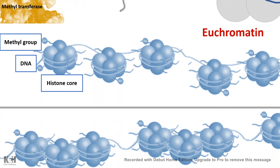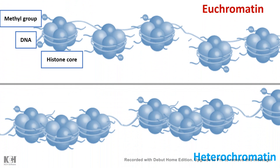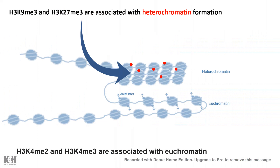Methylated histones are associated with both euchromatin and heterochromatin — it depends on which residue is methylated. For example, H3K9 trimethylation and H3K27 trimethylation are associated with heterochromatin states. So depending upon which residue is methylated and what type of methylation — dimethylation or trimethylation — the state of the chromatin is governed.